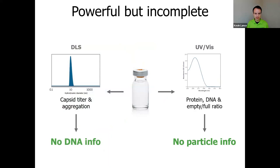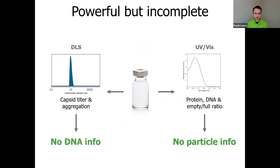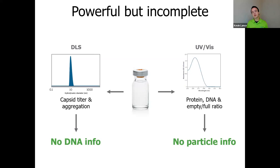If we start looking at basic analytical techniques like DLS and UV-Vis, each of them tells a part of the story. DLS gets you info on capsid titer and aggregation, but it can't tell you anything about the amount of DNA present in your sample. UV-Vis, on the other hand, can tell you the total amounts of protein and DNA present and you can use those to calculate the empty-full ratio, but it can't tell you anything about particles present. So each of these is a powerful technique, but on their own, they're incomplete.